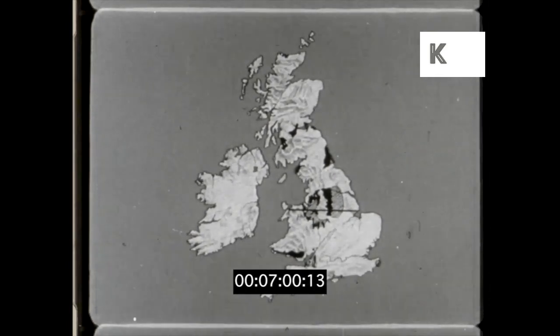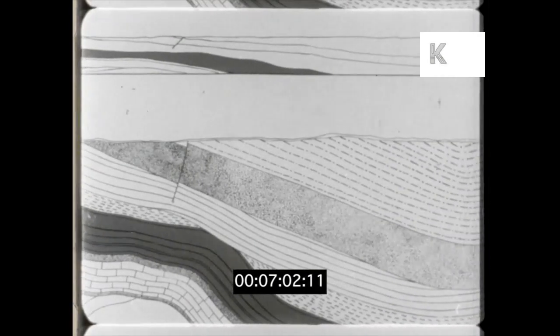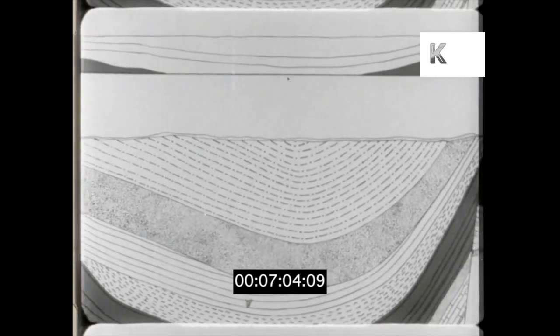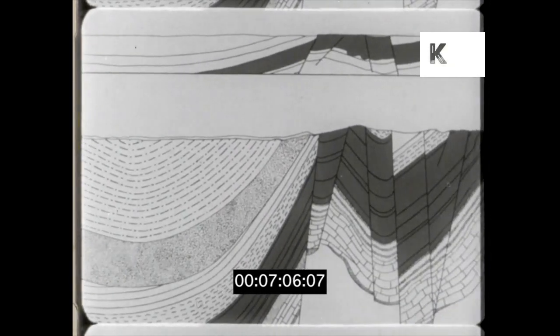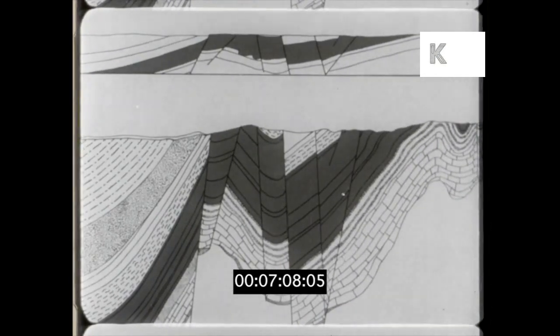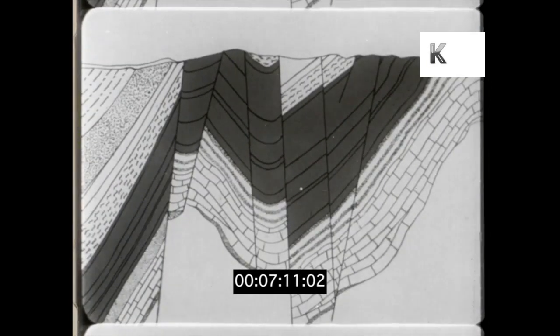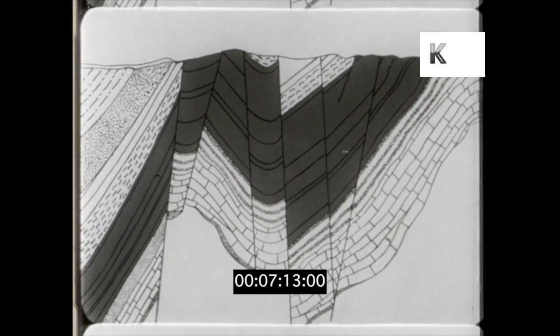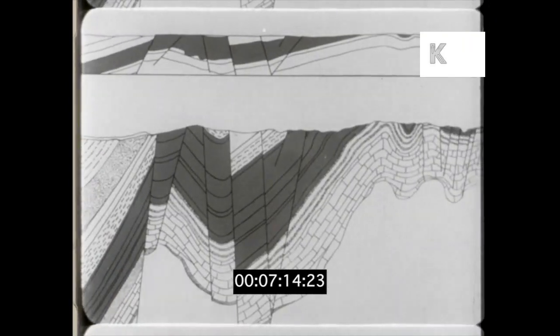A cross section through one part of England shows how much the coal seams have been changed by the earth movements. This is how they look in Lancashire where they slope steeply and come to the surface. The scale is exaggerated. The true scale is shown above.